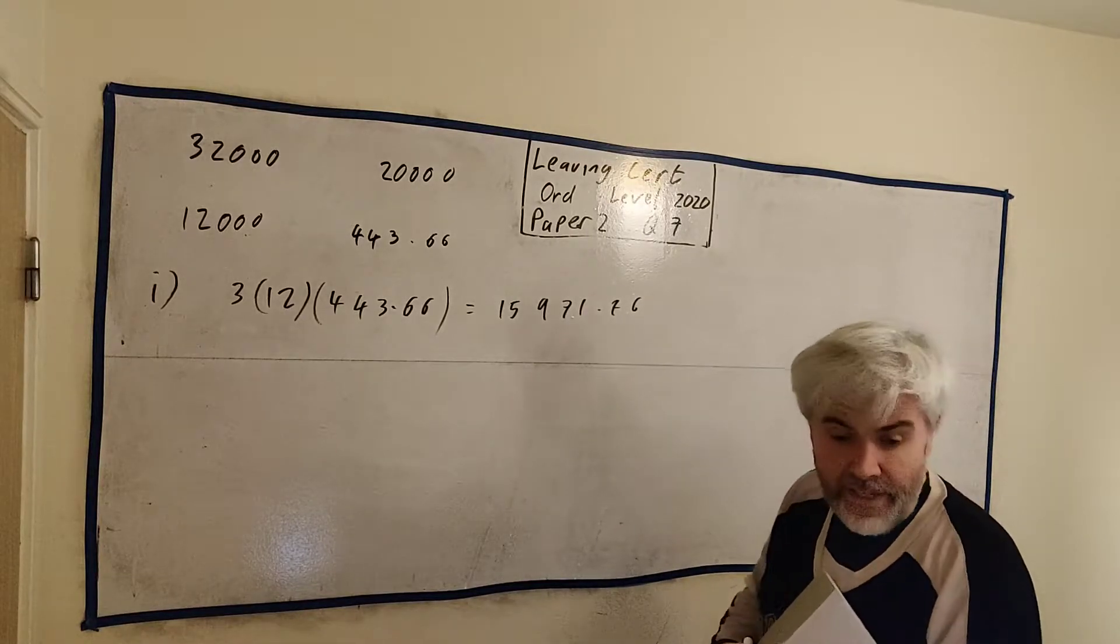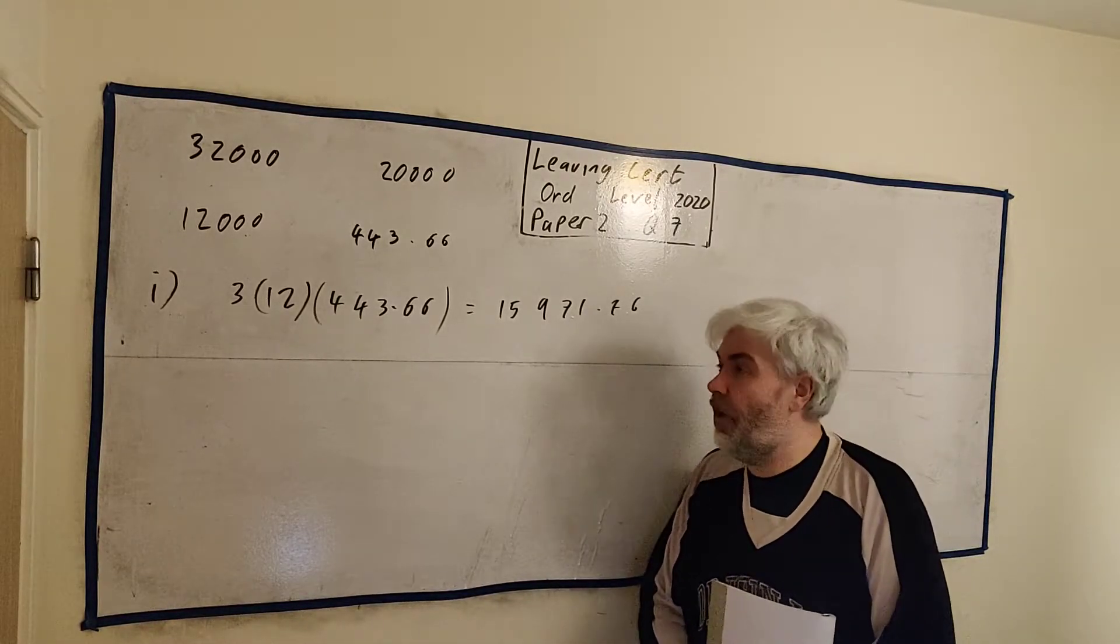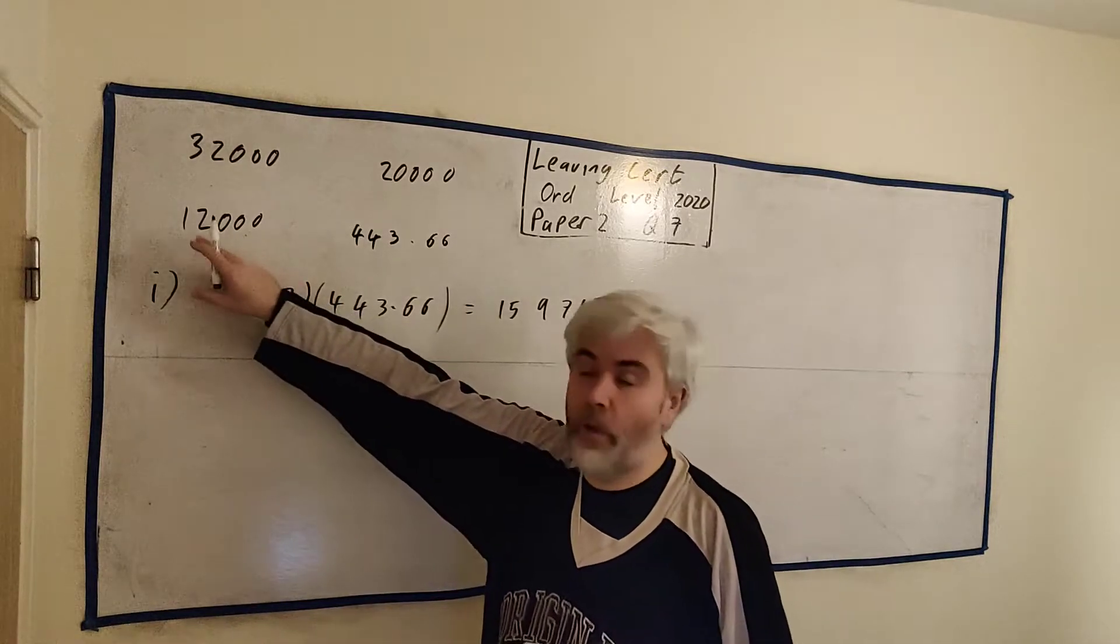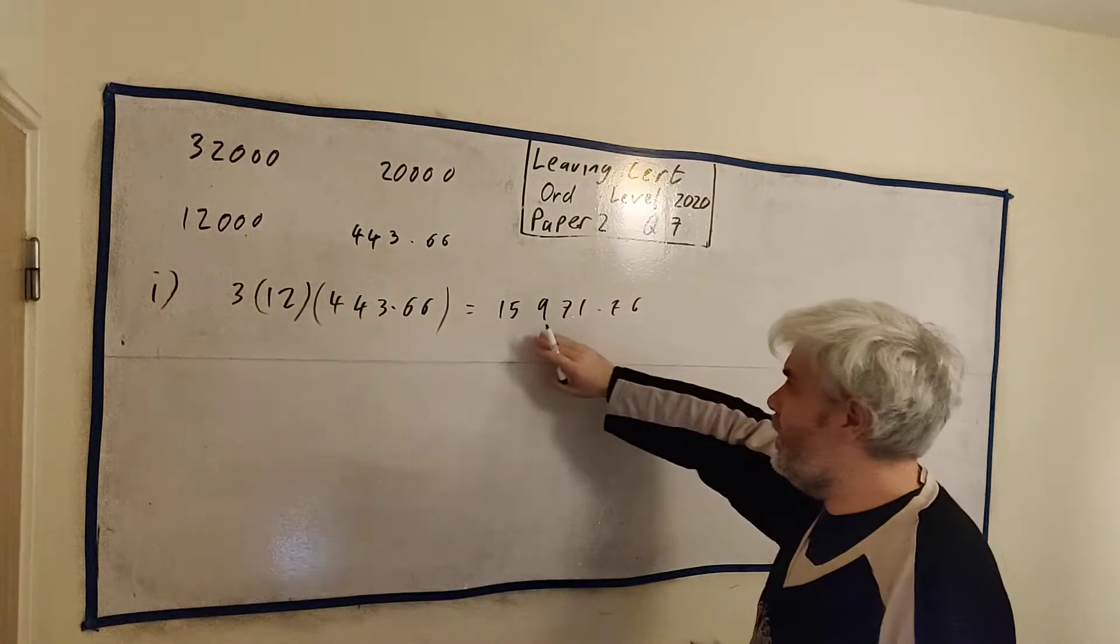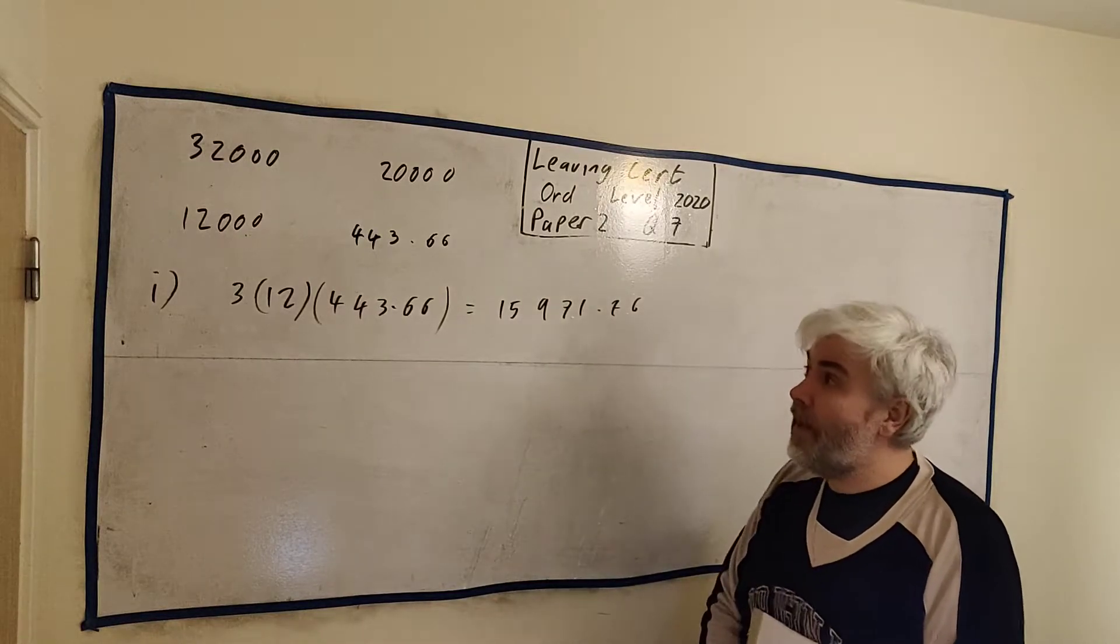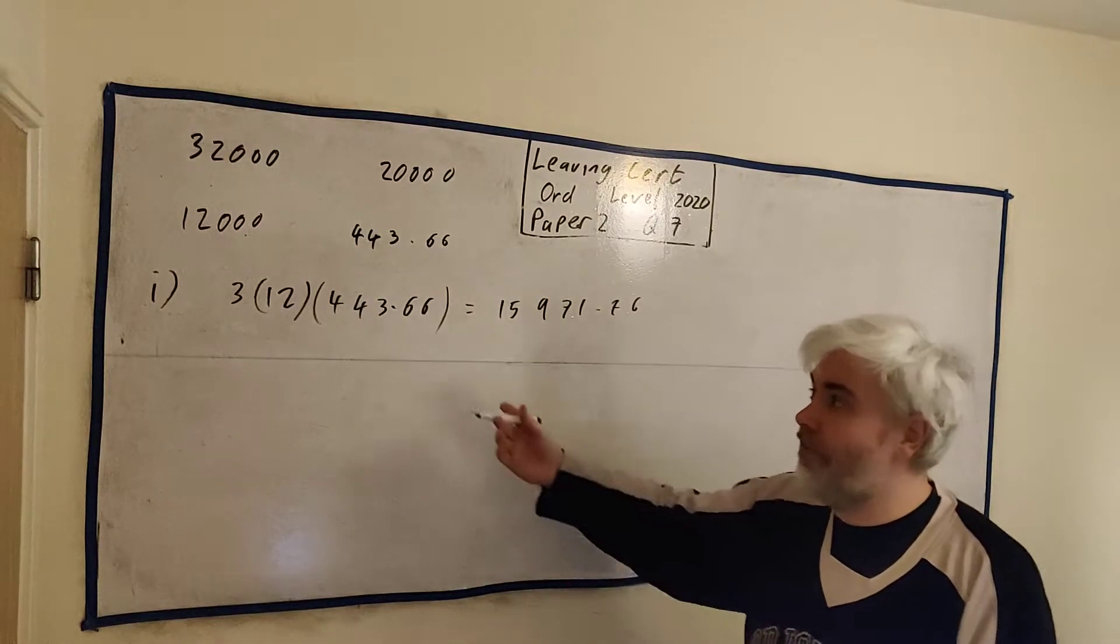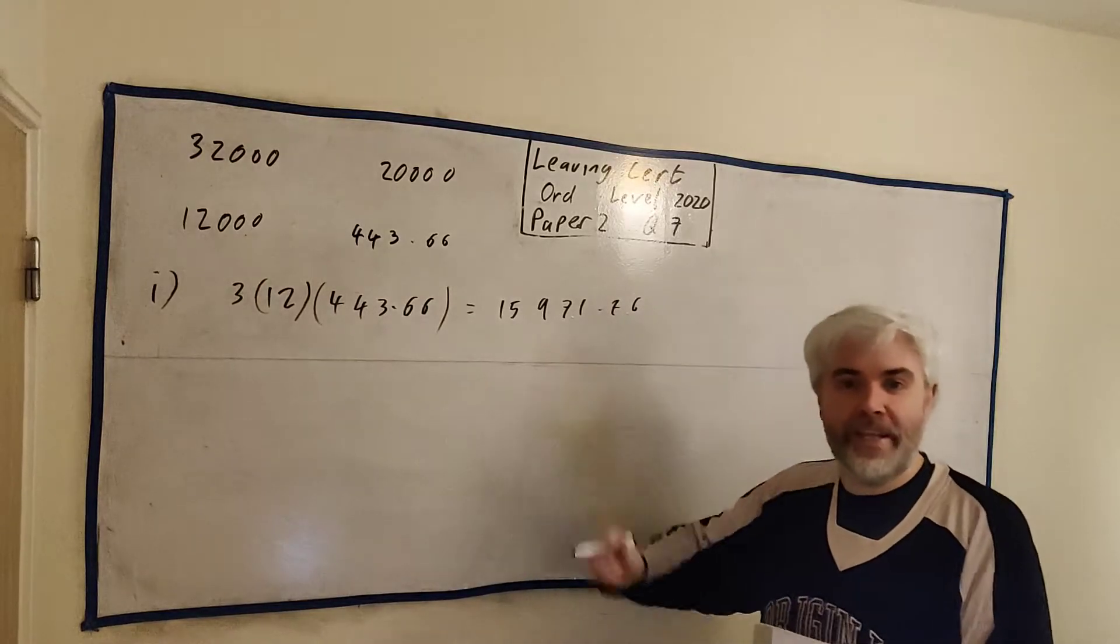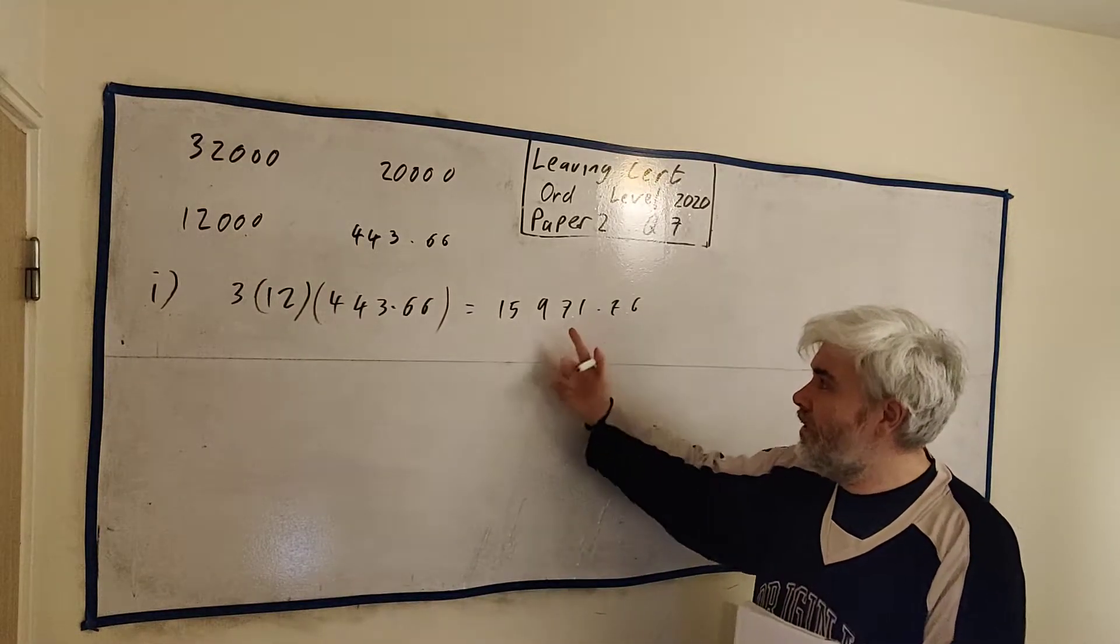He pays this every month for three years. So that first question is quite easy. We just need to multiply: every year, 12 months of the year, multiplied by €443.66. Multiply all three of these. This is 36 here, there's 36 months in three years. If I multiply all them together, I will get €15,971.76. And that makes sense.